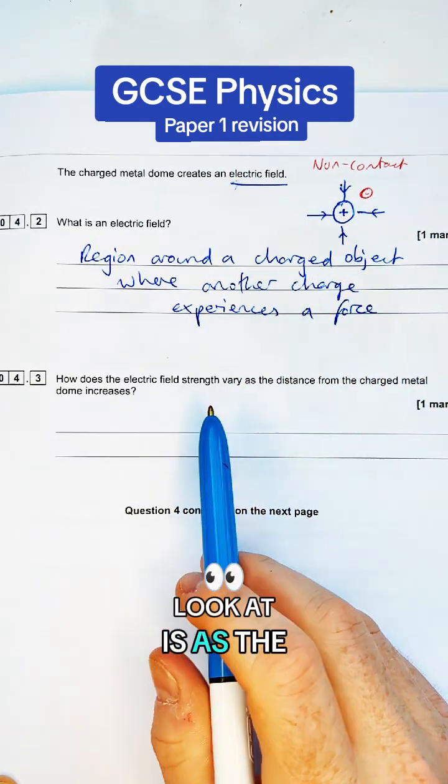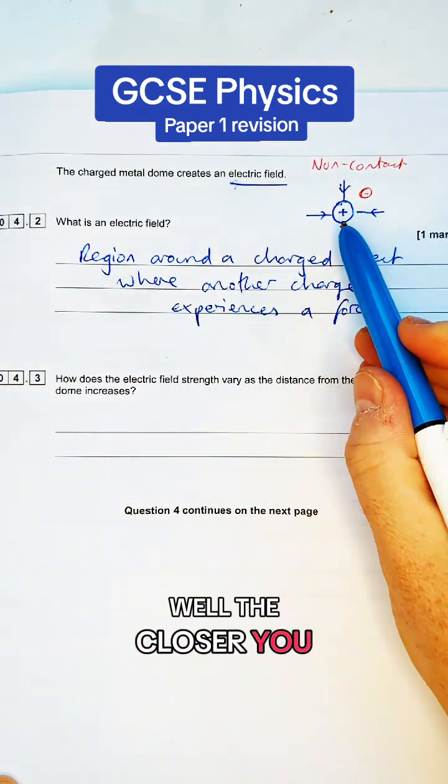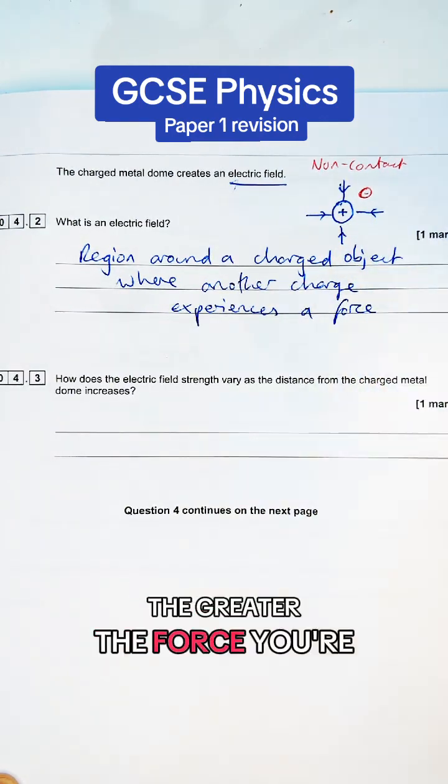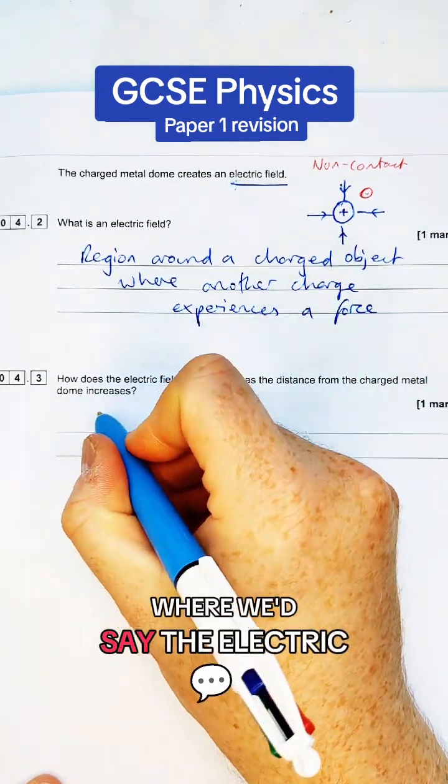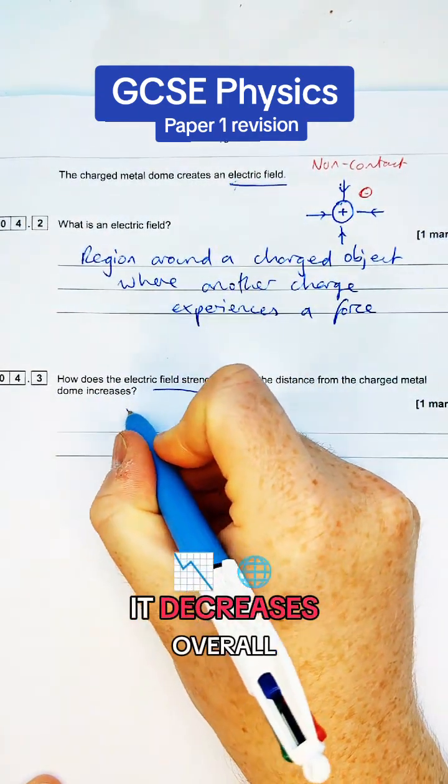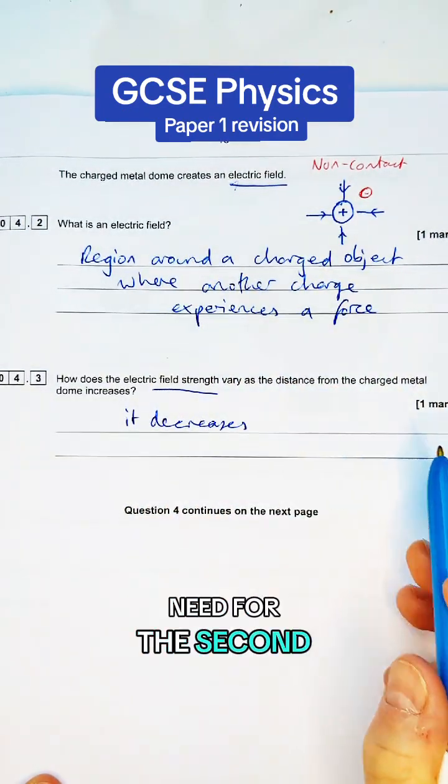The next thing to look at is as the distance varies, how does the electric field strength vary? Well, the closer you are to the object, the greater the force you're going to experience. So the question says, as the distance increases, the electric field strength decreases overall. It tells us in the question, so that's all we need for the second part of this question.